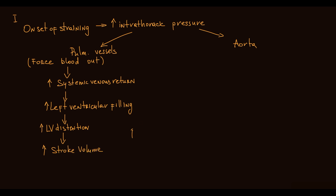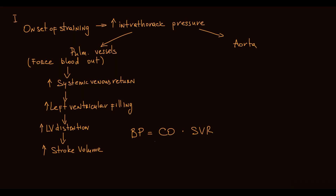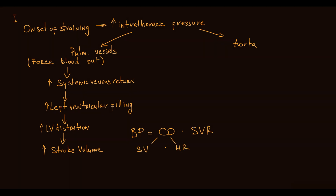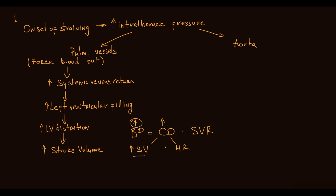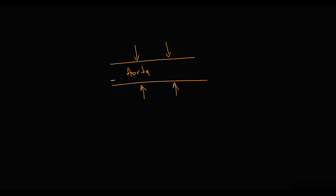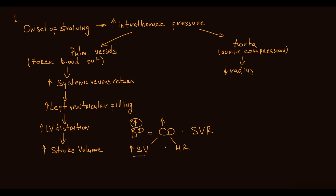Blood pressure equals cardiac output times systemic vascular resistance, and cardiac output equals stroke volume times heart rate. With increased stroke volume, cardiac output increases, resulting in increased blood pressure. Additionally, increased intrathoracic pressure compresses the aorta, decreasing its radius. Since resistance is inversely proportional to the fourth power of radius, aortic resistance increases, further contributing to rising blood pressure.